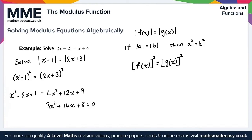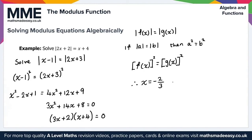Factorising gives (3x + 2)(x + 4) = 0. From 3x + 2 = 0 we get x = minus 2/3, and from x + 4 = 0 we get x = minus 4. That gives us the solution to this example and covers everything for solving modulus equations algebraically.